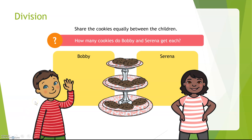There are cookies on the cookie plate. Let's count all the cookies. One, two, three, four, five, six, seven, eight. There are eight cookies on a cookie plate.